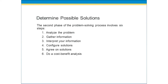Finally, the sixth step of this phase is to do a cost-benefit analysis. This will help you ensure that the solution you are about to choose will be the best benefit from both a cost and practical perspective. Doing a cost-benefit analysis will help you in the decision-making process as well as selling the solution after the decision has been made to those who are in power.